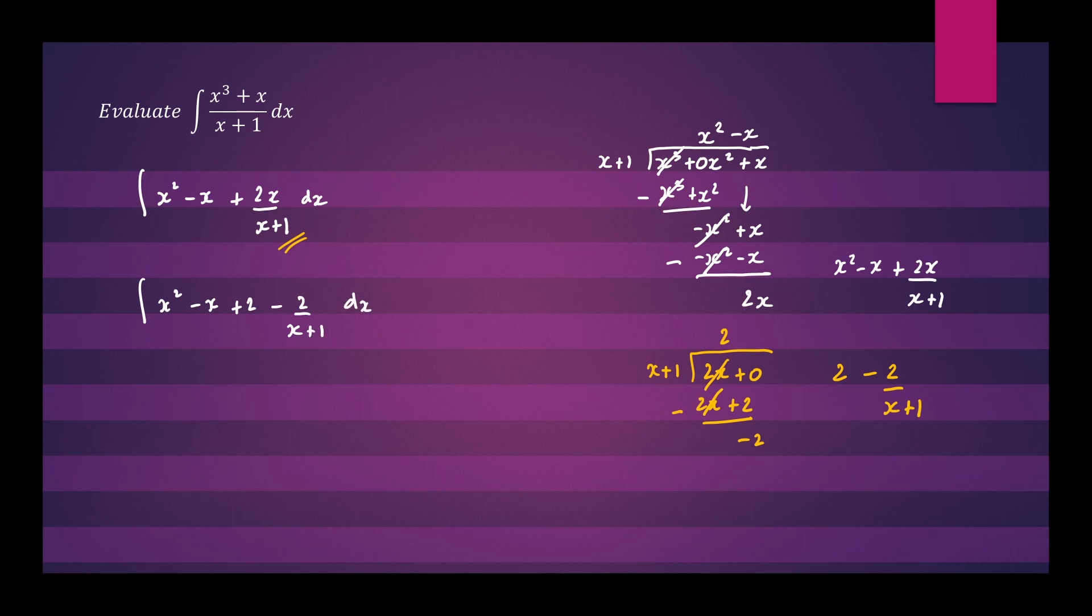So let's integrate each part now. x squared is one third x cubed, minus x is minus one half x squared, plus 2 will become 2x, minus 2 times the natural log of x plus 1, plus C our constant of integration.